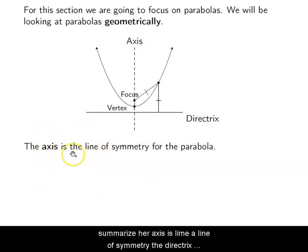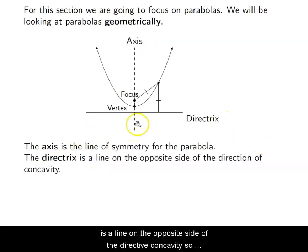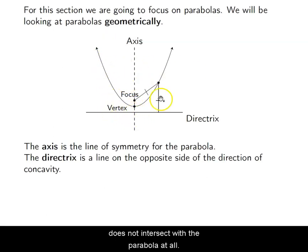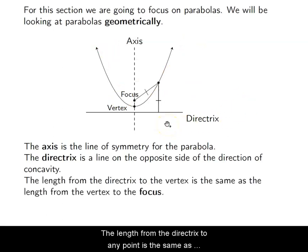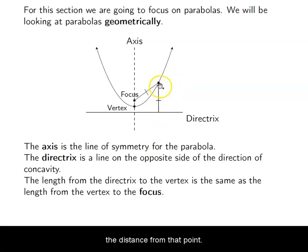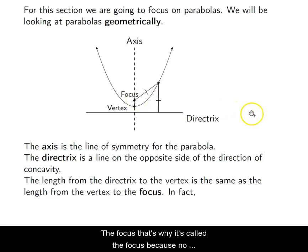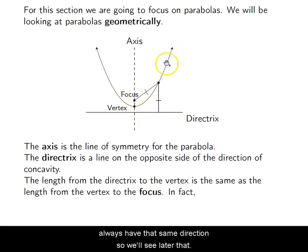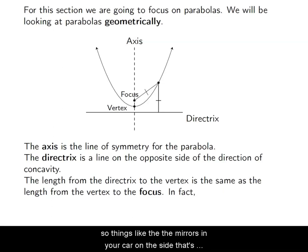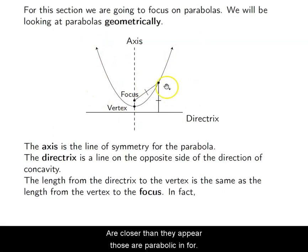To summarize: the axis is the line of symmetry; the directrix is a line on the opposite side of the concavity that does not intersect the parabola; the distance from the directrix to any point equals the distance from that point to the focus. That's why it's called the focus. We'll see later that this is how parabolic mirrors are formed — for example, the mirrors in your car that say 'objects appear closer than they appear' are parabolic in form.